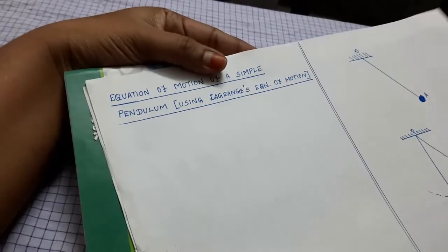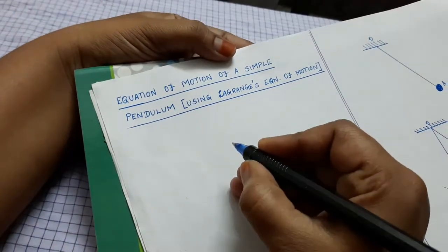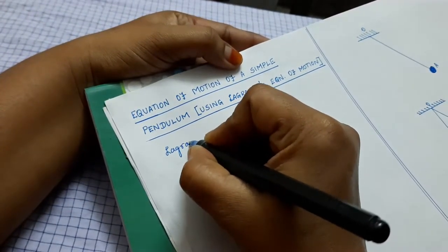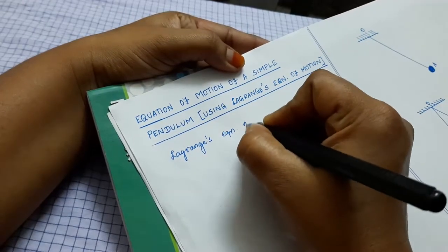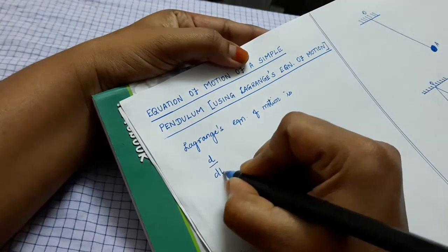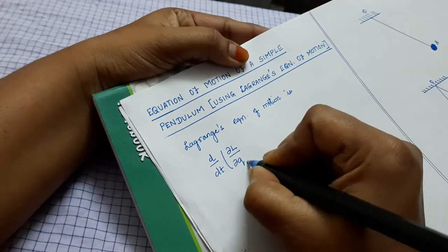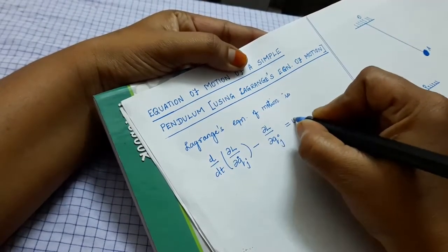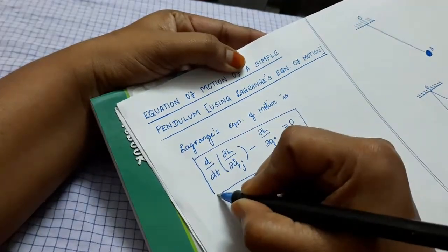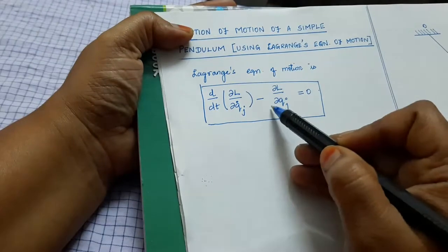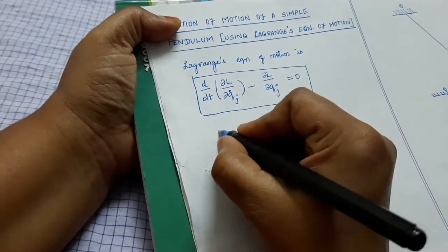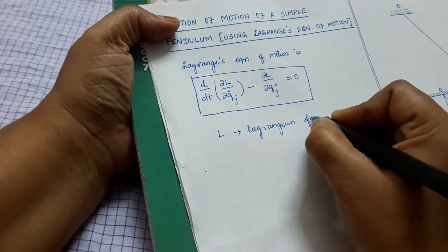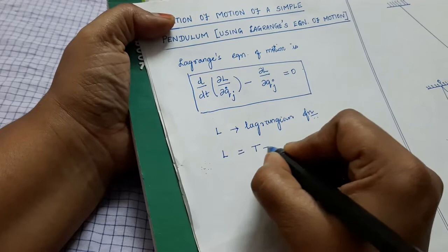In this video, let us derive the equation of motion of a simple pendulum using Lagrange's equation of motion. We know Lagrange's equation of motion is given by d/dt of ∂L/∂q̇ⱼ minus ∂L/∂qⱼ = 0. Here, L is called the Lagrangian function and L = T minus V.